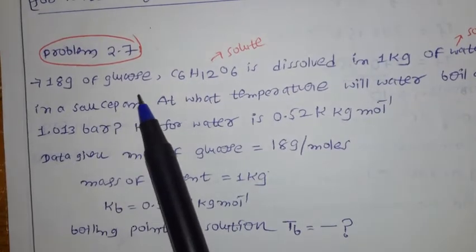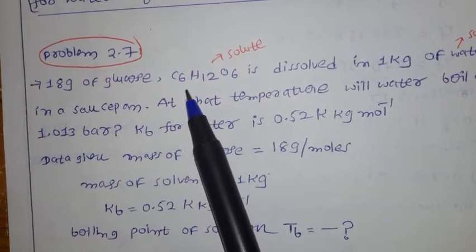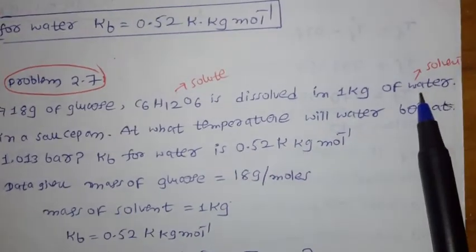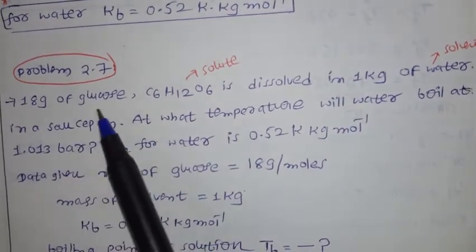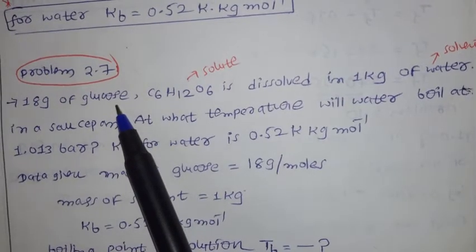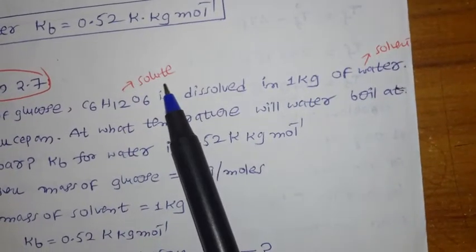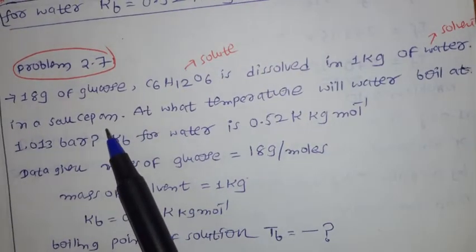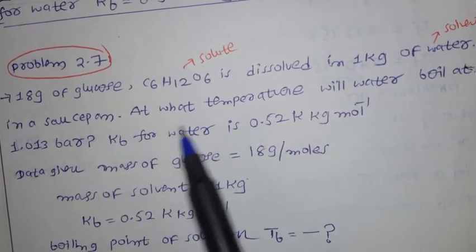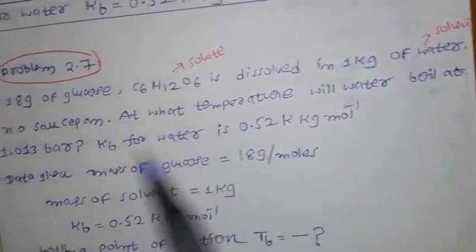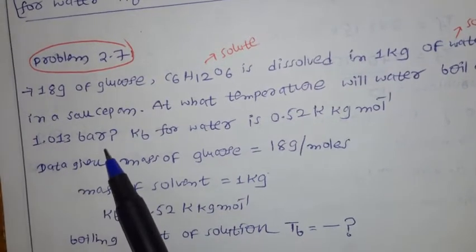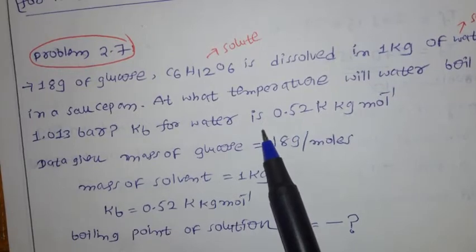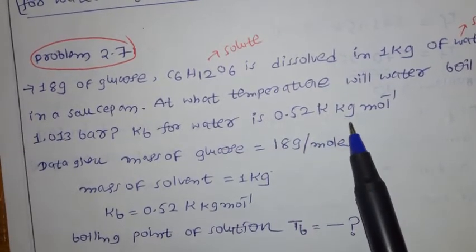Here, 18 grams of glucose — formula C6H12O6 — is dissolved in 1 kg of water. So glucose is the solute and water is the solvent. The question asks: at what temperature will water boil at 1.013 bar? Kb for water is given as 0.52 kelvin·kg per mole.